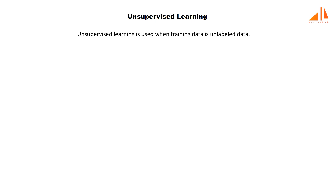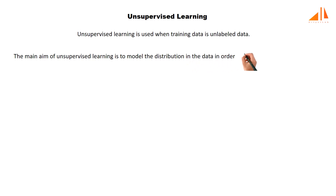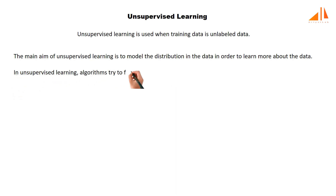Now let's discuss another learning technique: unsupervised learning. Unsupervised learning is used when training data is unlabeled, meaning only input data is present and no corresponding output variables. If the dataset does not have any target variable, you apply unsupervised learning. The main aim is to model the distribution in the data to learn more about it. These algorithms group unsorted information based on features like similarities and patterns, without any target values, and try to find hidden patterns or knowledge which can lead to final decisions.